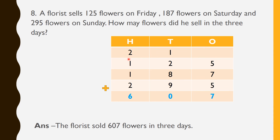The values at the hundreds place are 2, 1, 1, and 2. We add all these together and the answer is 6. Therefore, the answer of this question is 607. We have to write this answer in this format: the florist sold 607 flowers in 3 days. Hope you have understood all the examples. Thank you! Bye-bye.